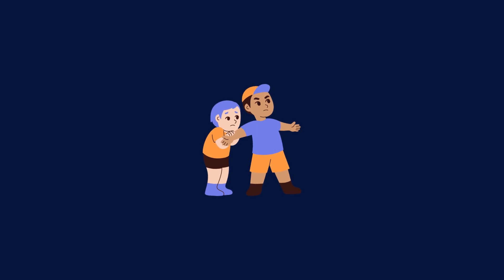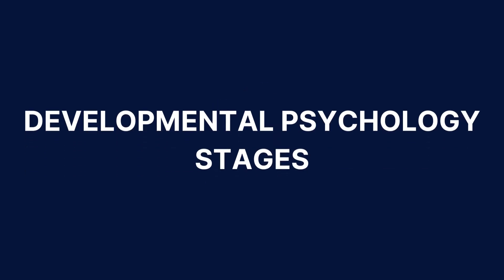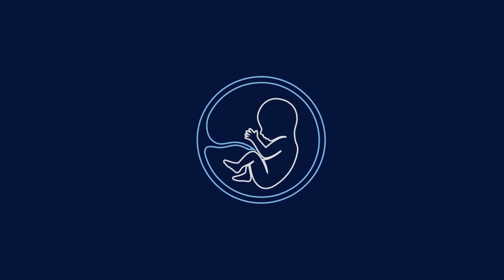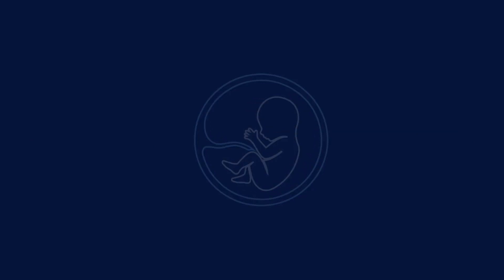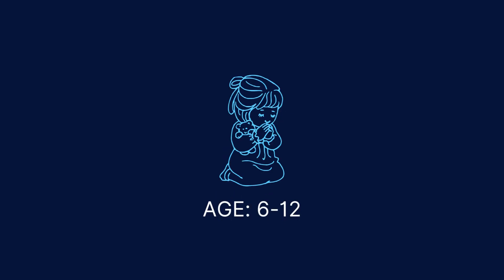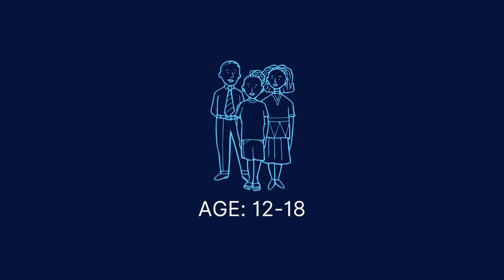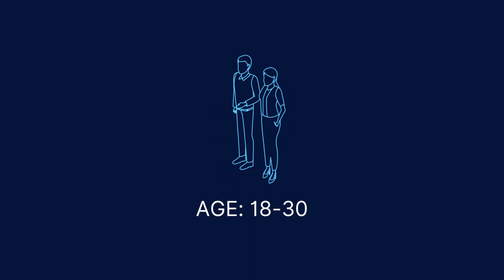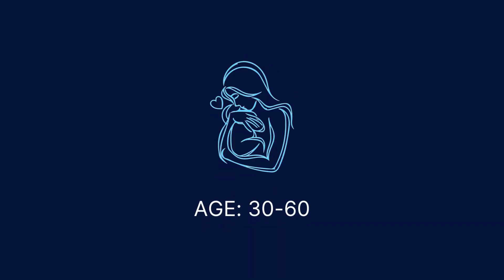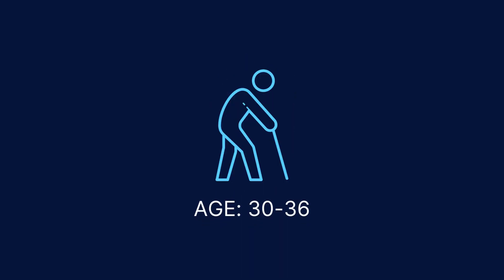Developmental psychology has seven stages — various periods of growth and development that a person goes through in their life. These stages are often divided into prenatal development, early childhood, middle childhood, adolescence, early adulthood, middle adulthood, and late adulthood.